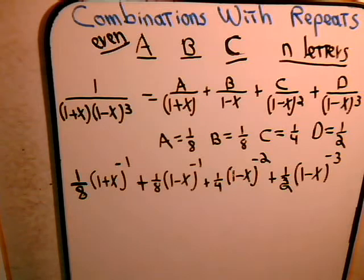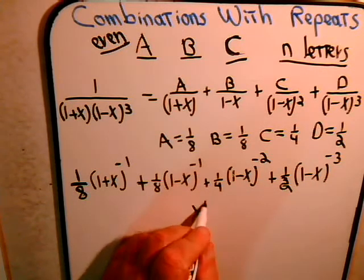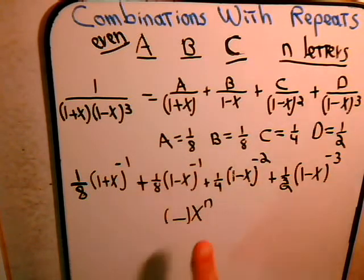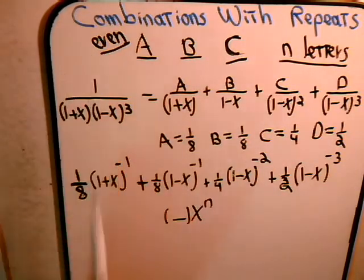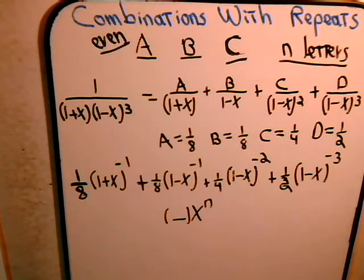Now what we need to do is, for each one of these individually, determine what the coefficient of x to the n will be. Then we're going to add them all up, and that coefficient of x to the n tells us how many ways we can select n letters from A, B, and C repeatedly, making certain that we include an even number of As. All the previous work was done in the preceding video.